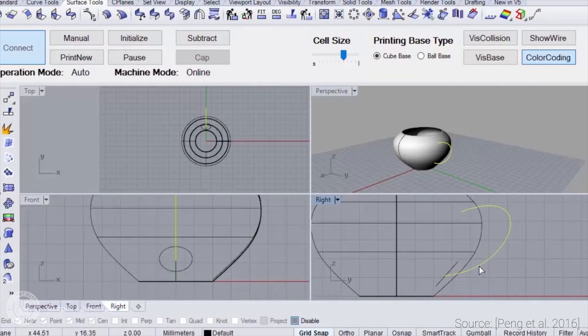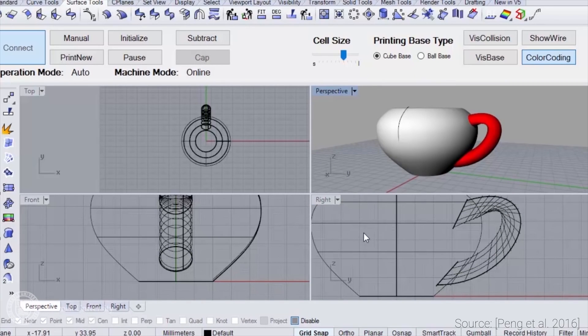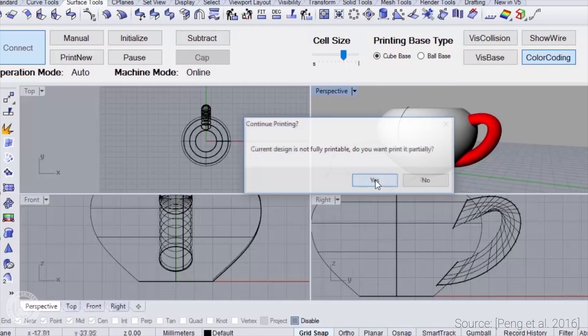Also, the handle of the teapot here collides with the body. Because of the limitations of wireframe modeling, such cases have to be detected and omitted.